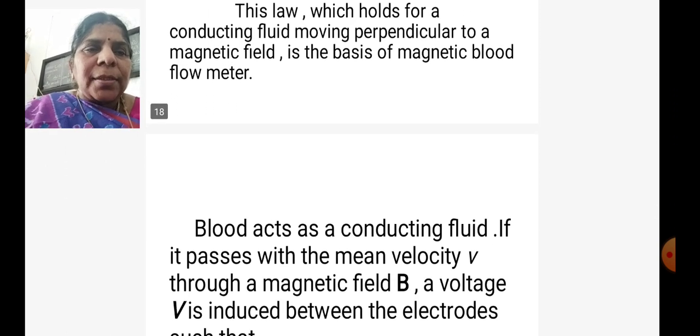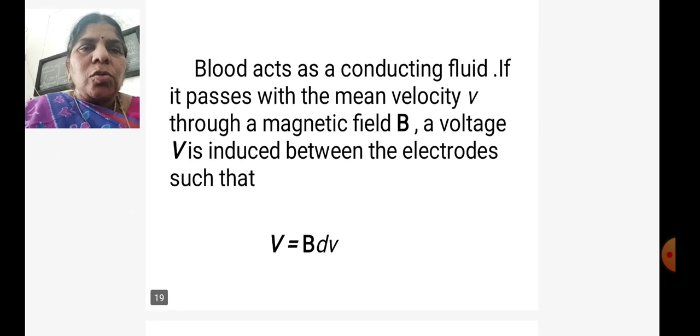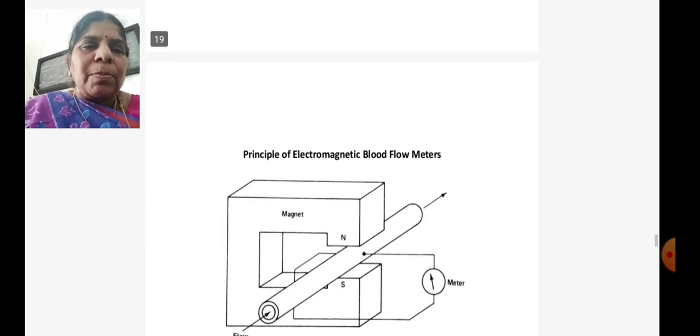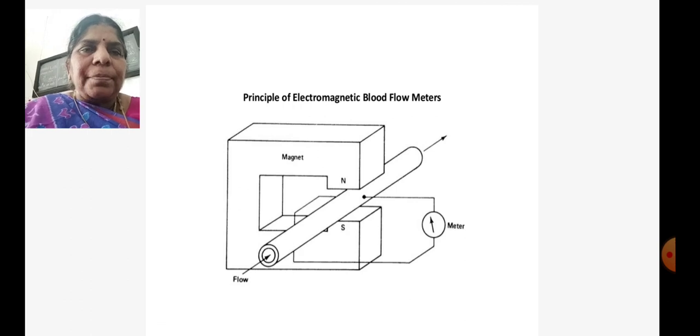Here, blood acts as a conducting fluid that moves with velocity v through a magnetic field B. An induced voltage V is applied between electrodes such that the induced voltage will produce a small voltage equal to BDv, where D is the diameter of the blood vessel. You can see the diagram.